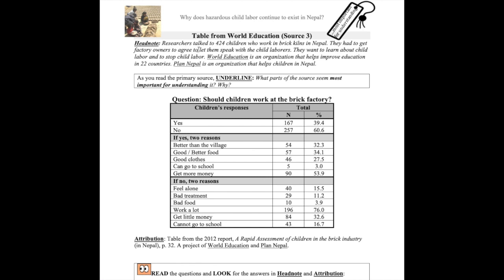Researchers talked to 424 children who work in brick kilns in Nepal. They had to get factory owners to agree to let them speak with the child laborers. They want to learn about child labor and to stop child labor. World Education is an organization that helps improve education in 22 countries. Plan Nepal is an organization that helps children in Nepal.